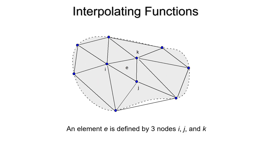Each element is triangular and therefore defined by three nodes. In general, we'll say that element E must be defined by three nodes I, J, and K. That's how we think about discretizing this computational domain.